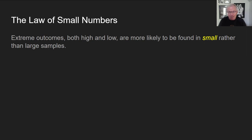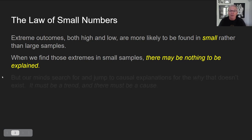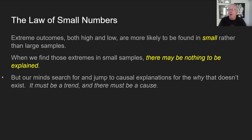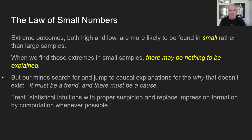The mistake is that we often take these small-number experiences to be representative of what's going on in the world at large. When we find extremes in small samples, there may be nothing to explain — some of this just happens at random — but our minds search for and jump to causal explanations for a 'why' that doesn't exist. Kahneman says we ought to treat our statistical intuitions with proper suspicion and replace impression formation with computation wherever possible.